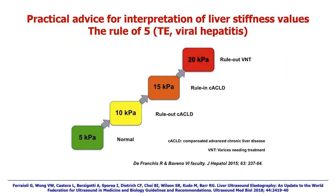The updated World Federation guidelines have endorsed the rule of five for transient elastography: below 5 kPa the patient is normal; below 10 kPa we can rule out compensated advanced chronic liver disease (F3 and F4 stage); at 15 kPa we can rule in compensated advanced chronic liver disease; and below 20 kPa we can rule out varices needing treatment.